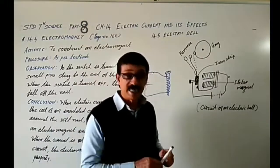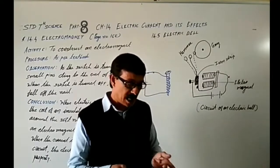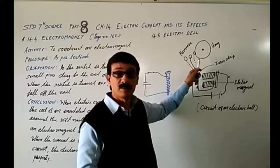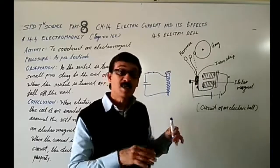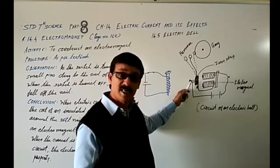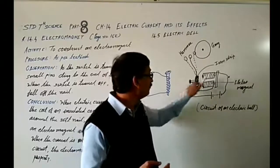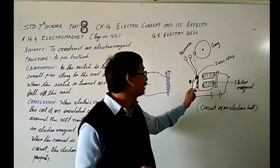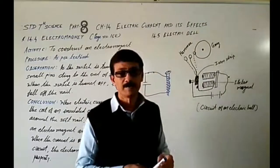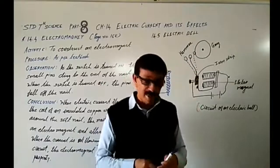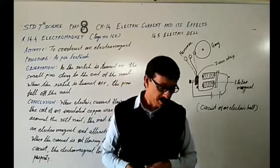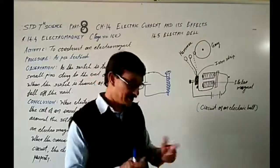This process is repeated very quickly, and that is why we hear the bell ringing continuously. So this is how the electric bell works. With this, our chapter is also finished. We have understood two effects of electric current: one is the heating effect, and the second is the magnetic effect.